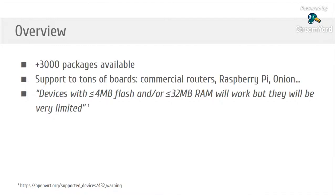OpenWRT contains about 3,000 packages in its repositories, so you can install packages ranging from SSH servers to web servers — a great variety is available. A lot of boards are supported, especially commercial routers. Some Wi-Fi routers are compatible with OpenWRT, so you can remove the stock firmware provided by the manufacturer and install your own firmware based on OpenWRT.